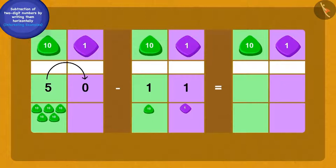We will borrow one ten from five tens of 50 and thus make ten ones. Because we borrowed one ten, we have four tens left now.